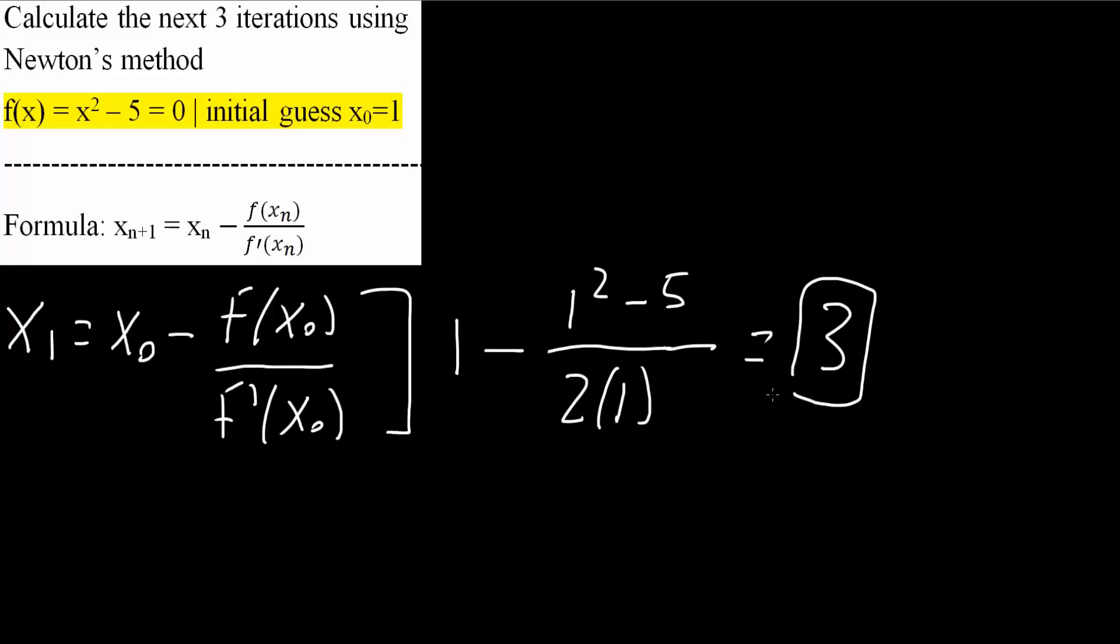So we get 3. And so this right here is 1 iteration. But we want 2 more. So we want x₂ and x₃. And so if you want, right now, you could pause the video and try to get x₂ and x₃.